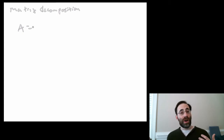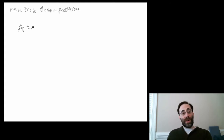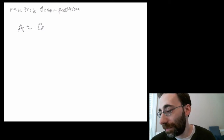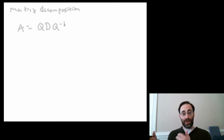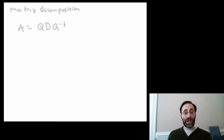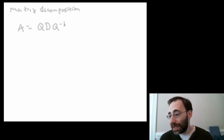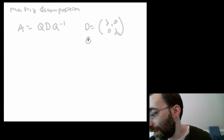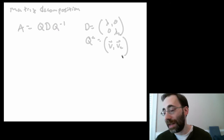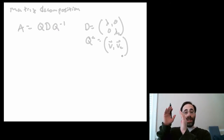The idea is: if you have a matrix A with all distinct eigenvalues — so none of the eigenvalues are repeated — we're going to assume that all the eigenvalues are unique and non-repeated. Then you can write A as Q D Q-inverse, where Q is a matrix made up of eigenvectors of the matrix A, and D is a diagonal matrix with eigenvalues on the diagonal. For a 2×2 matrix, the diagonal would be the two different eigenvalues, and Q would be a matrix consisting of column vectors placed side by side, where the first column vector corresponds to the first eigenvalue, the second column vector corresponds to the second eigenvalue, and so on.